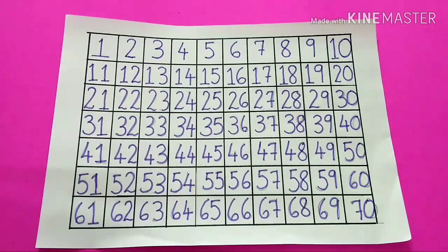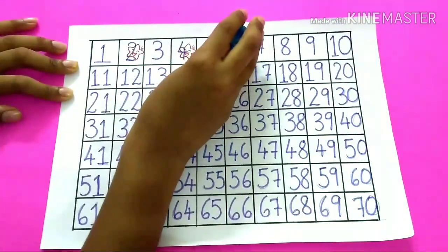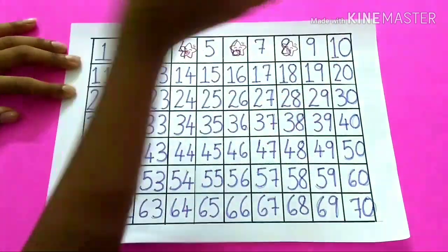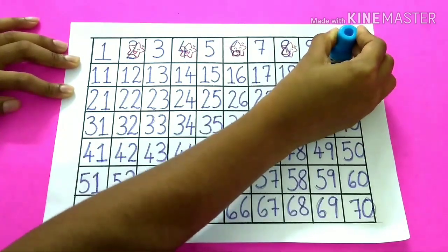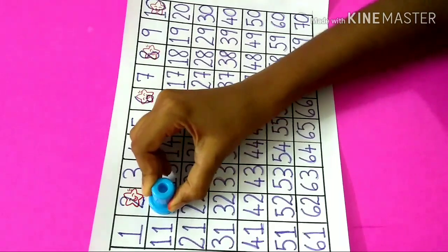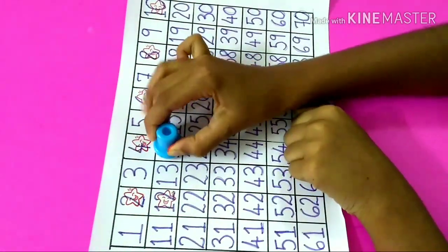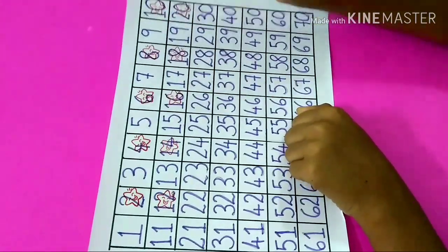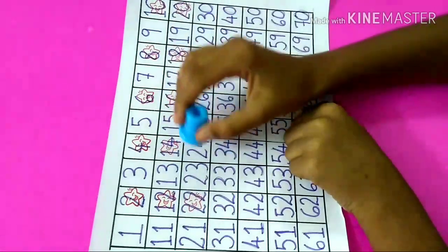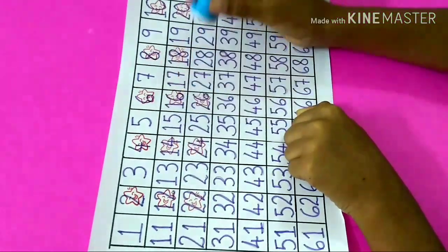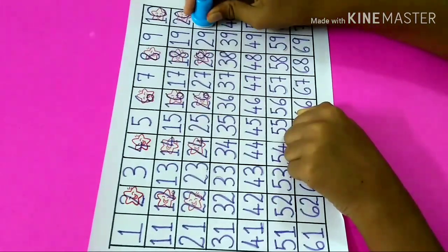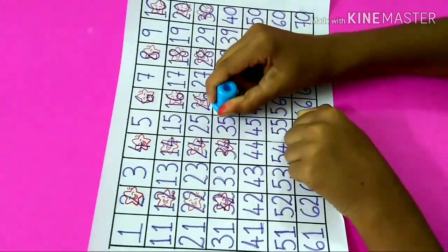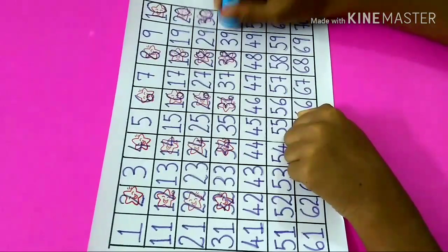6, 8, 10, 12, 14, 16, 18, 20, 22, 24, 26, 28, 30, 32, 34, 36, 38, 40.